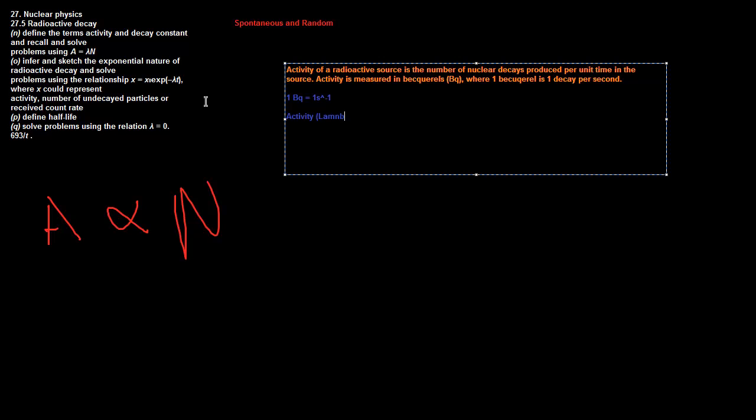Anyway, activity, which is lambda, is defined as the probability per unit time that a nucleus will undergo decay. And you can see this from the example I put before. If there's a ten percent chance that... sorry, this isn't activity, this is the decay constant.